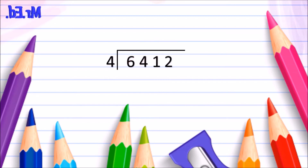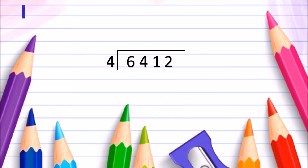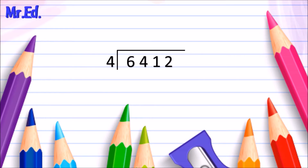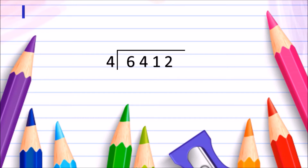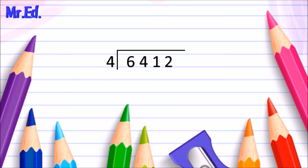Let's look at a more difficult one. This one is 6,412 divided by 4. Remember, we're going to divide our dividend, which is 6,412, by a divisor, and we're going to see how many times our divisor can go into our dividend, breaking the dividend down into single digits.